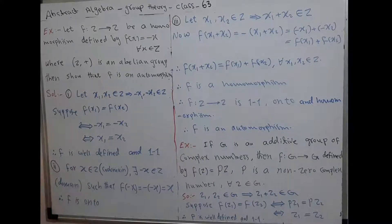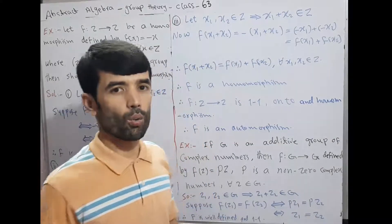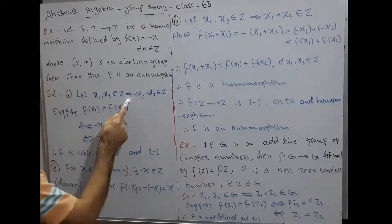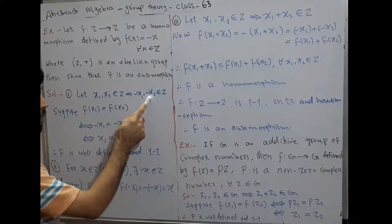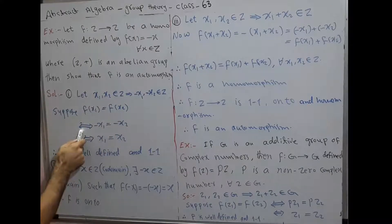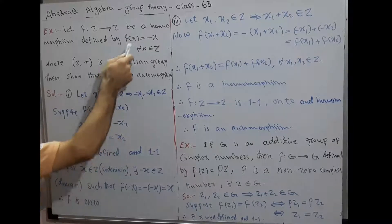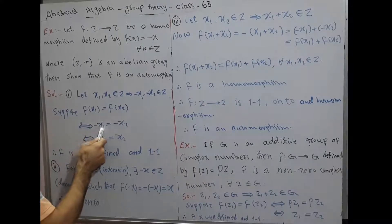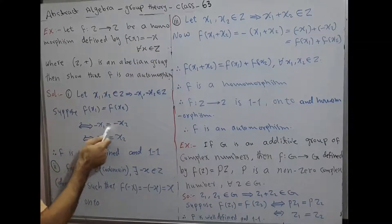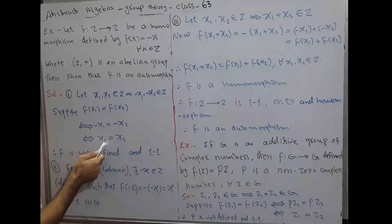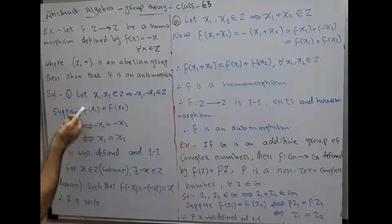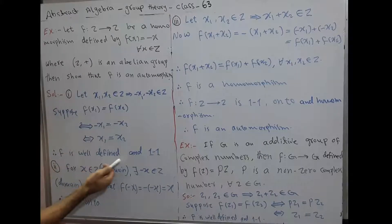According to our definition, we want to show that F is one-one, F is onto, and F is a homomorphism. First, let x1, x2 belong to Z, which implies -x1 and -x2 also belong to Z. Suppose F(x1) = F(x2), if and only if -x1 = -x2, according to the definition. If we multiply both sides by minus, we get x1 = x2. Therefore, F is well-defined and one-one.